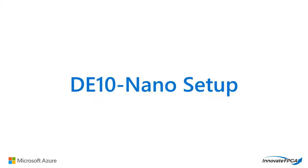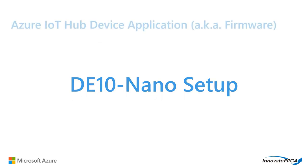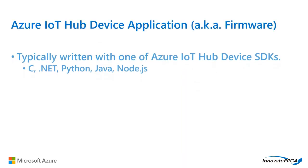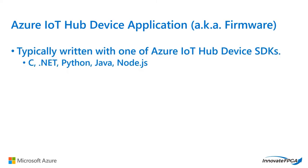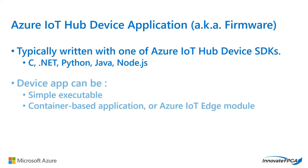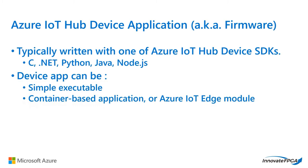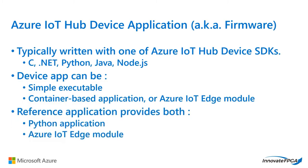Let's go through the DE10nano setup. In order for the device to communicate with the IoT solution, the device application must be run on the device. The device application is typically written in the language of your choice using Azure IoT Hub device SDKs. It can be container-based or an Azure IoT Edge module.